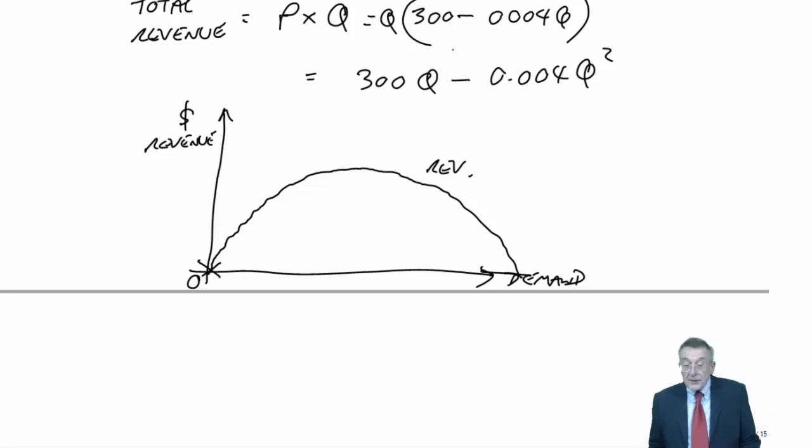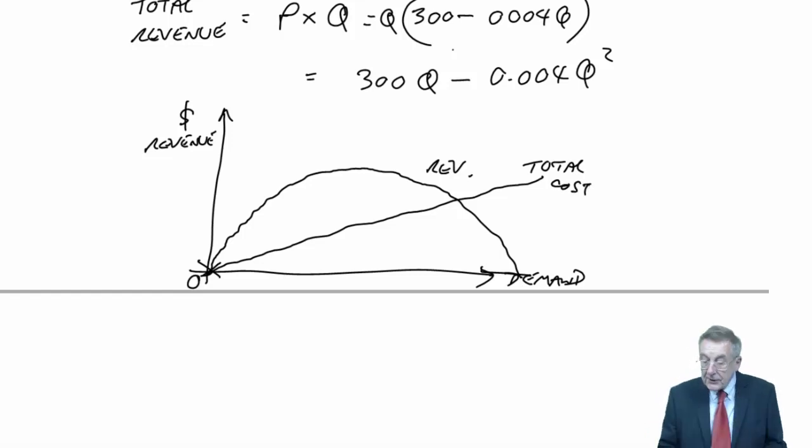The costs would look something like this. The total cost, it's $40 a unit. So no units, no cost, more units, more cost.